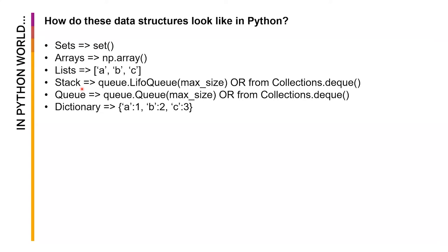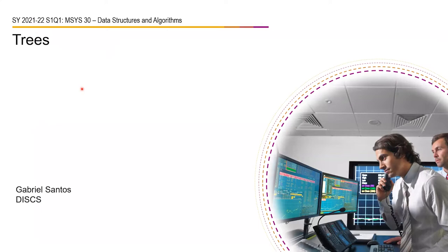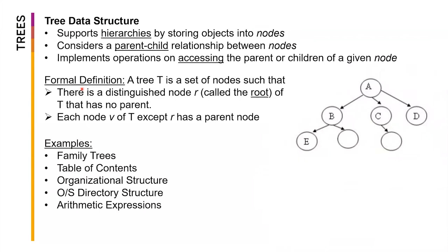Now we'll introduce another data structure, which is what we call trees. Trees support hierarchies by storing objects into specific nodes. For example, we have object A on this node, object B on this node, and C, D, and E.